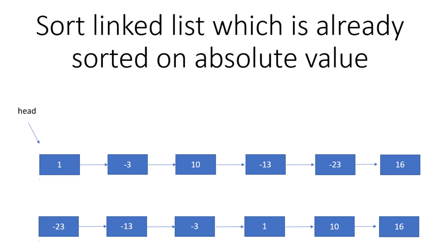Welcome to Coding Simplified. We have a linked list question: given a linked list sorted on absolute values — for example 1, -3, 10, -13, -23, 16 — we need to sort it on actual values. So the correctly sorted list would be -23, -13, -3, 1, 10, 16.